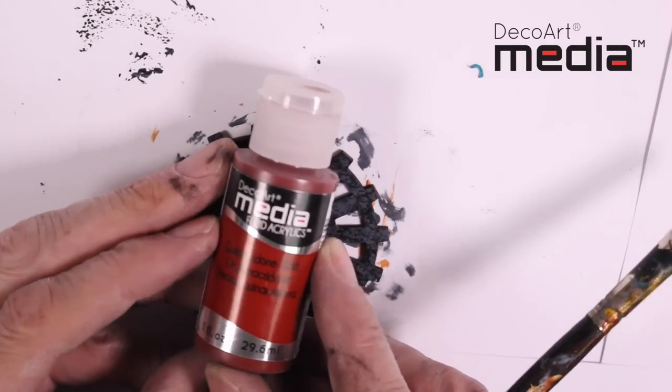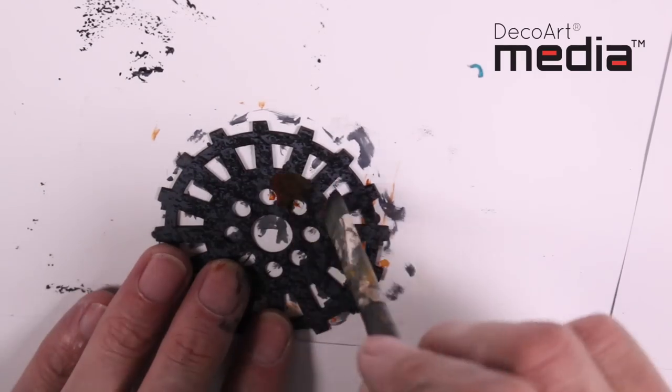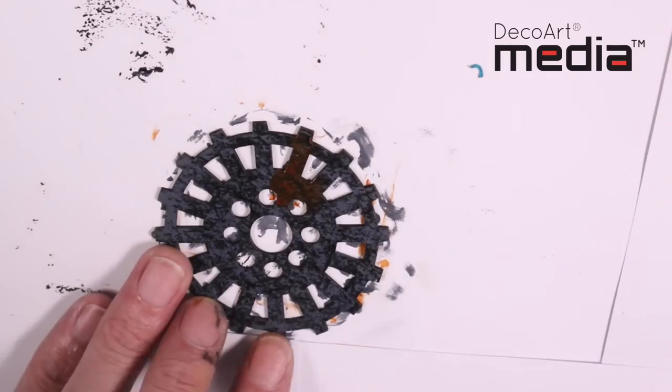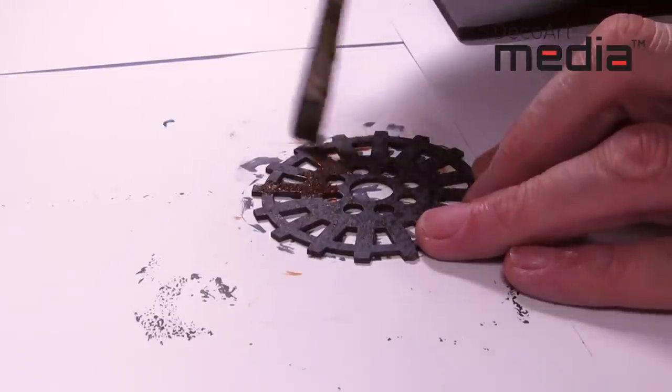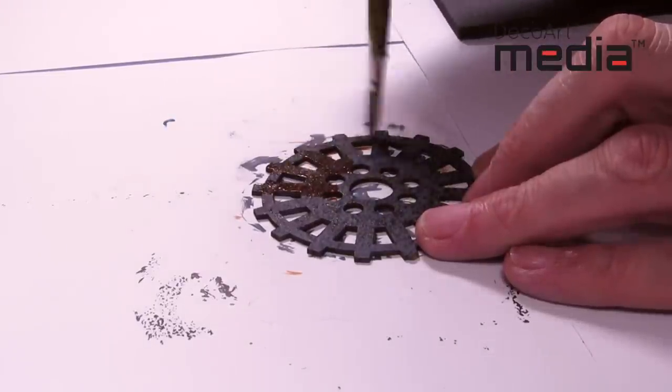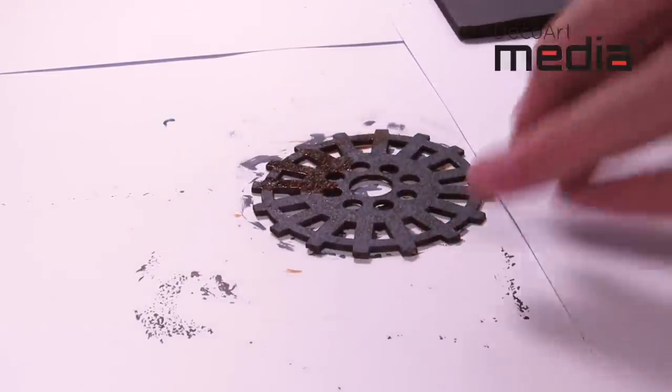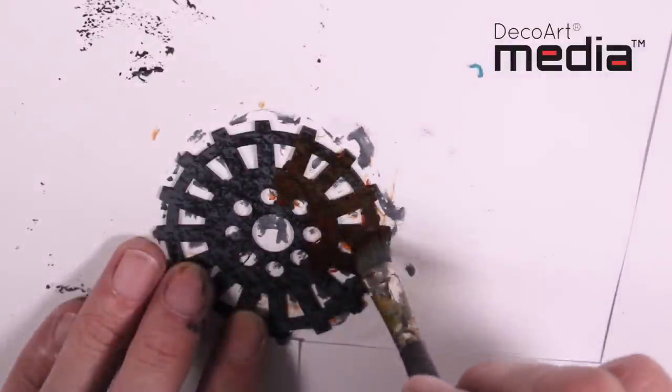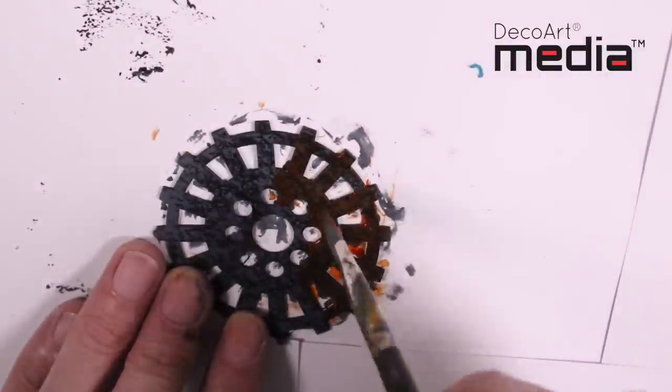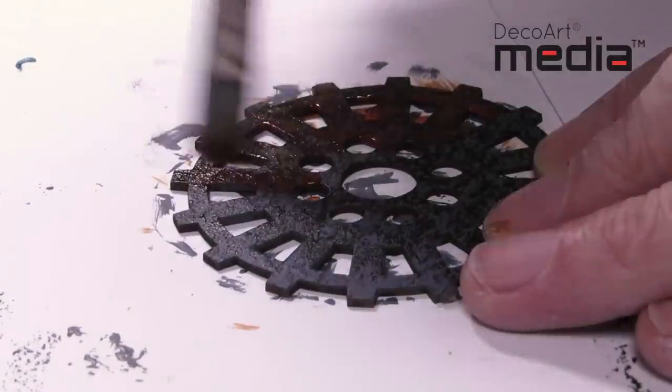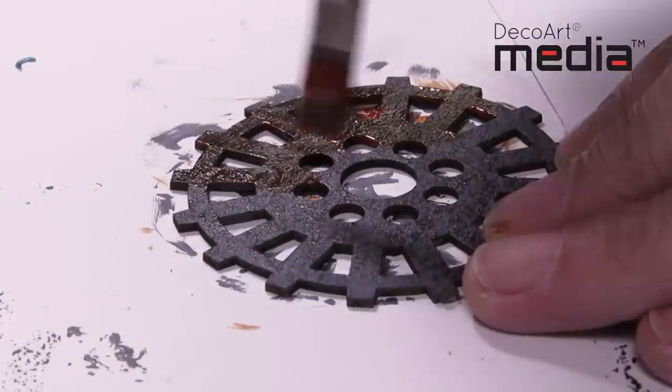Next, I'm going to apply one coat of Quinacridone Gold. You can see from this angle the texture on the cog that the stamped paint has given.